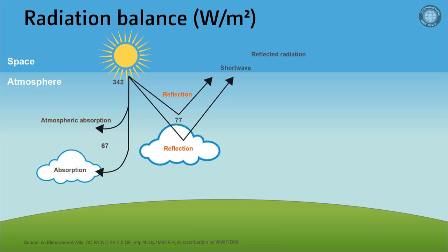Another part is immediately reflected back into space by the atmospheric components, which means that it does not even reach the Earth's surface. Also, 30 watts per square meter are reflected from the Earth's surface into space. About 168 watts per meter squared ultimately reach the Earth's surface and are absorbed.